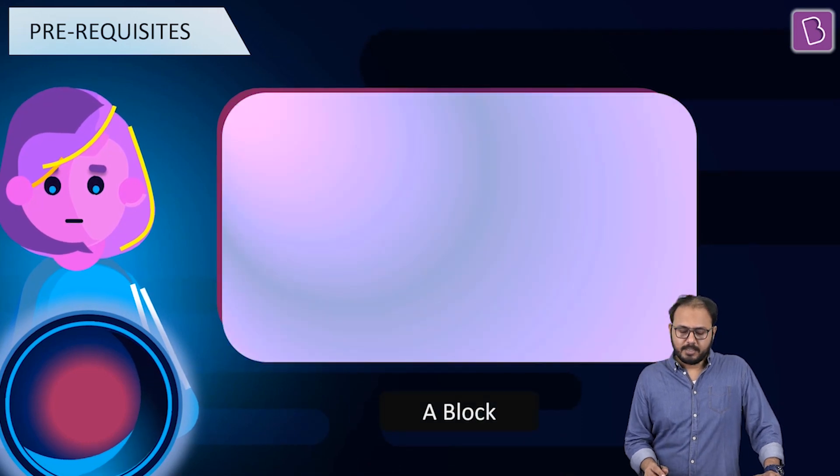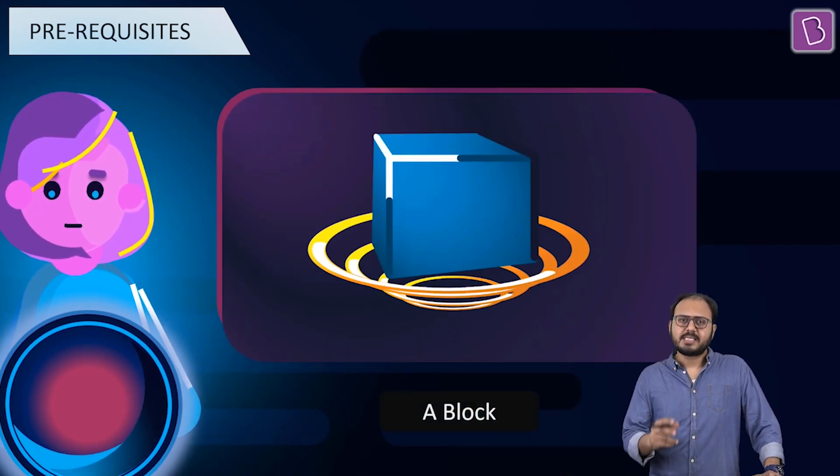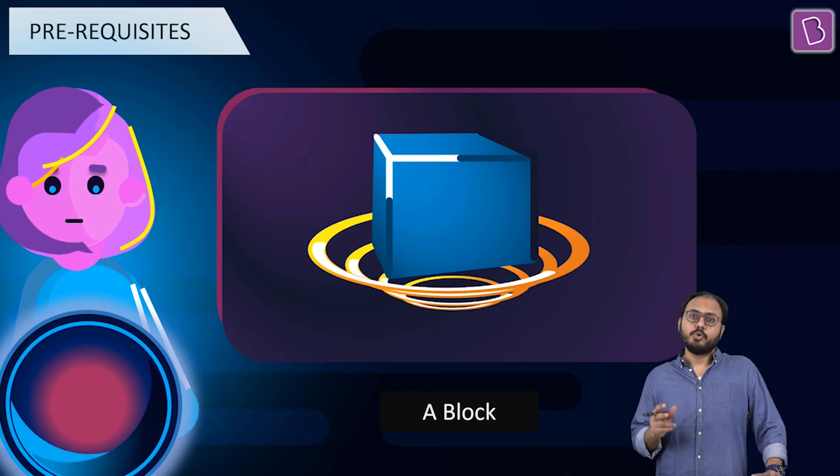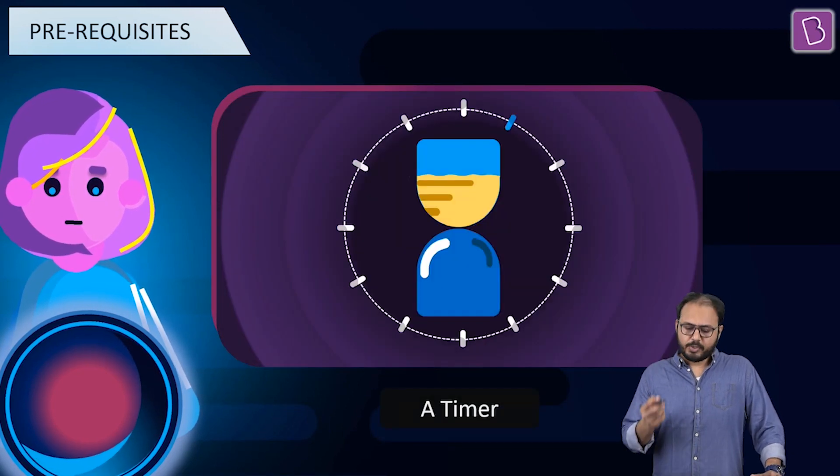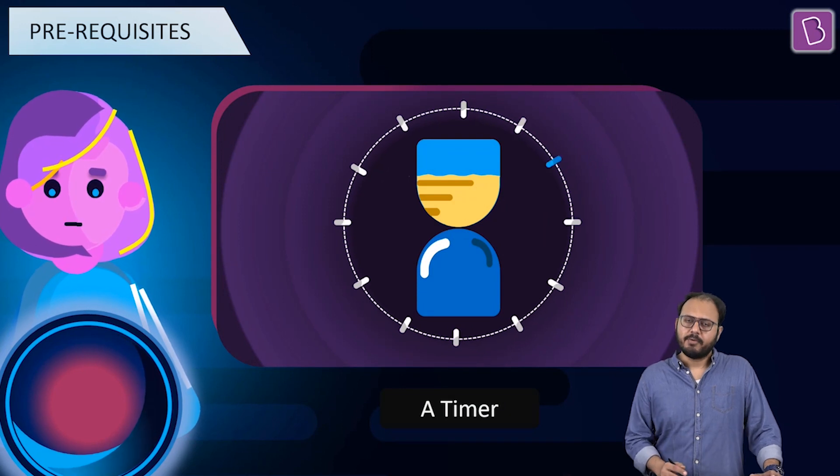Next, we need a block. Why do we need a block? Because we need someone that force gun to use on. Alright. And we need a timer which will measure the time taken for the event. Perfect.